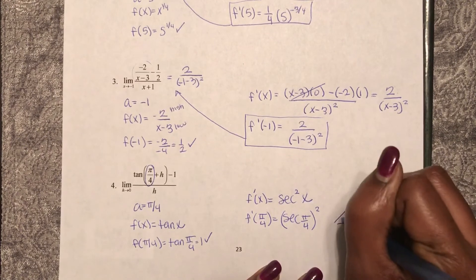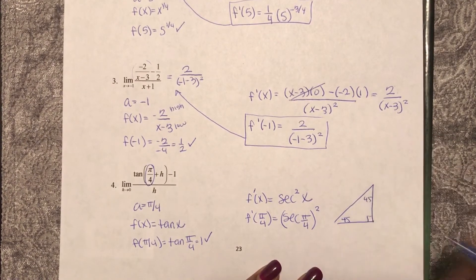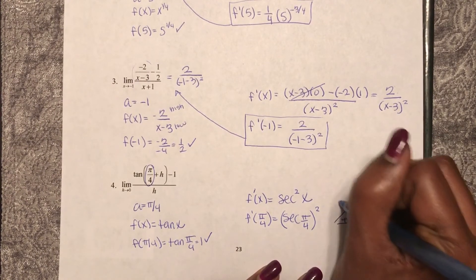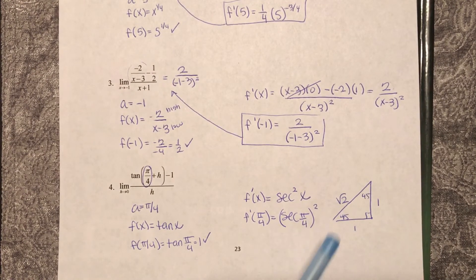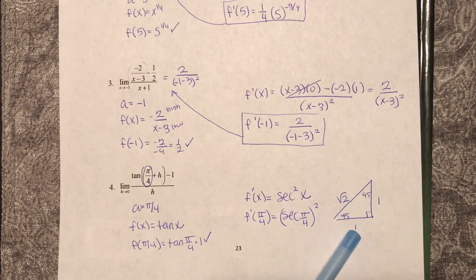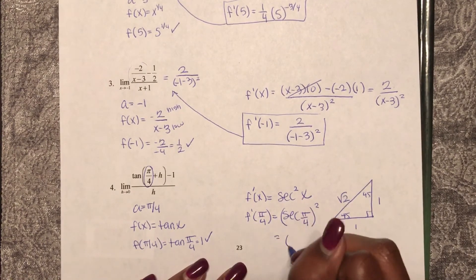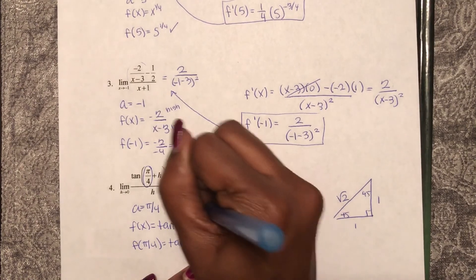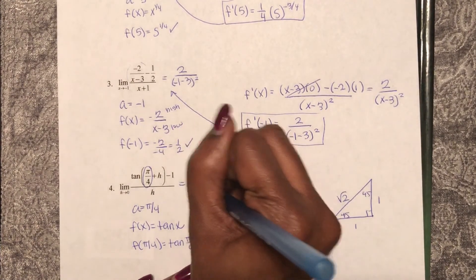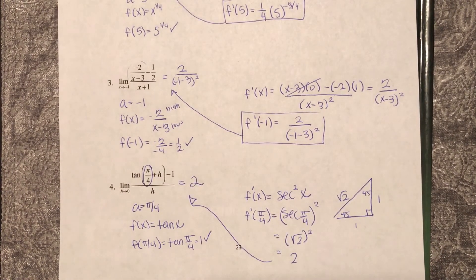So in case we've forgotten, this is a 45-45-90 triangle, 1-1 square root 2 ratio. So secant of 45 is hypotenuse over adjacent. So that is square root of 2 squared, or 2. So this limit derived as a derivative is 2.